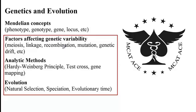In this lecture, I would like to continue talking about different factors that can affect genetic variability, whether from errors or from population genetic effects like genetic drift. We'll talk about analytical methods like the Hardy-Weinberg principle and test cross, then go over evolutionary concepts like natural selection, speciation, and the definition of evolutionary time. Finally, we will go over some practice questions before we conclude this video.